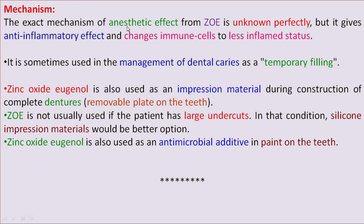The exact mechanism of the anesthetic effect from Zinc Oxide Eugenol cement is unknown, but it gives an anti-inflammatory effect and changes the immune cells present in the nerve to a less inflamed status. It is sometimes used in the management of dental caries as a temporary filling, and is also used as an impression material during the construction of complete dentures, which are removable plates applied on the teeth.